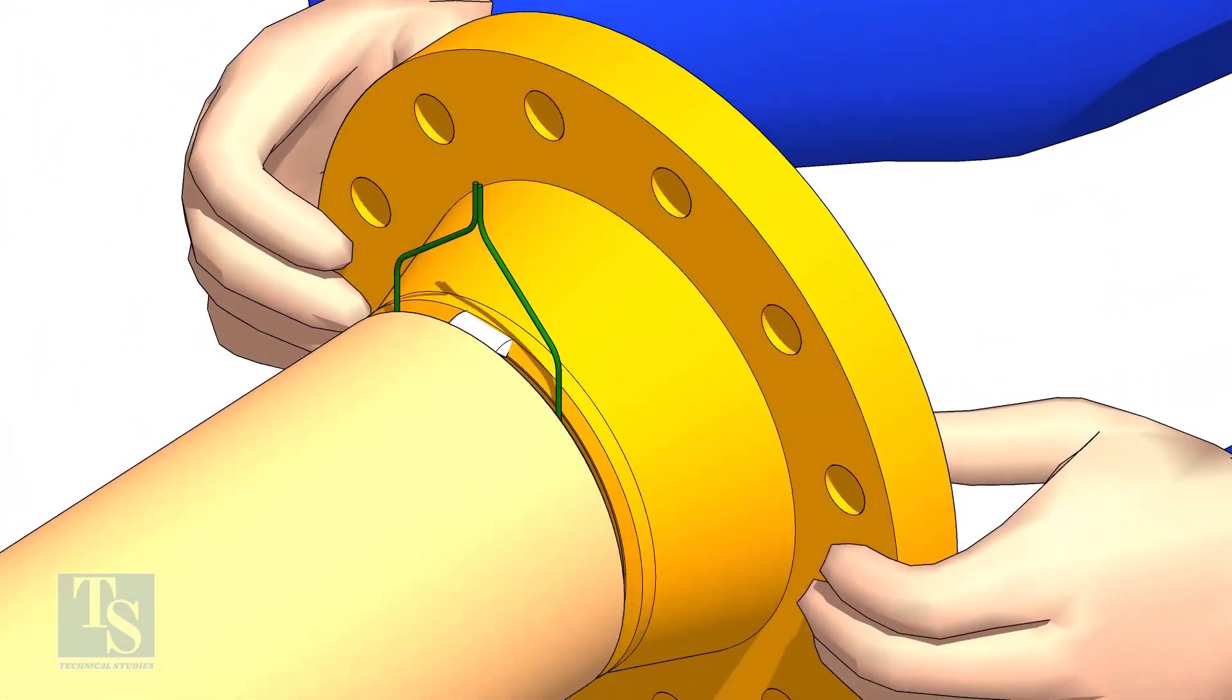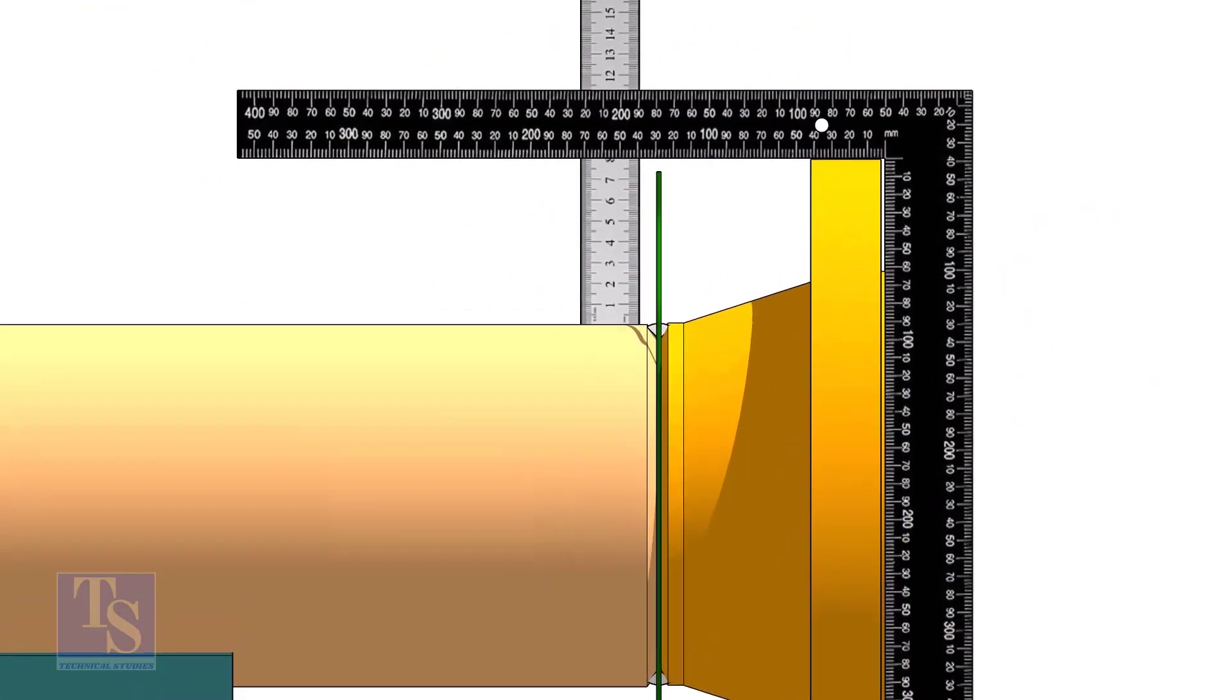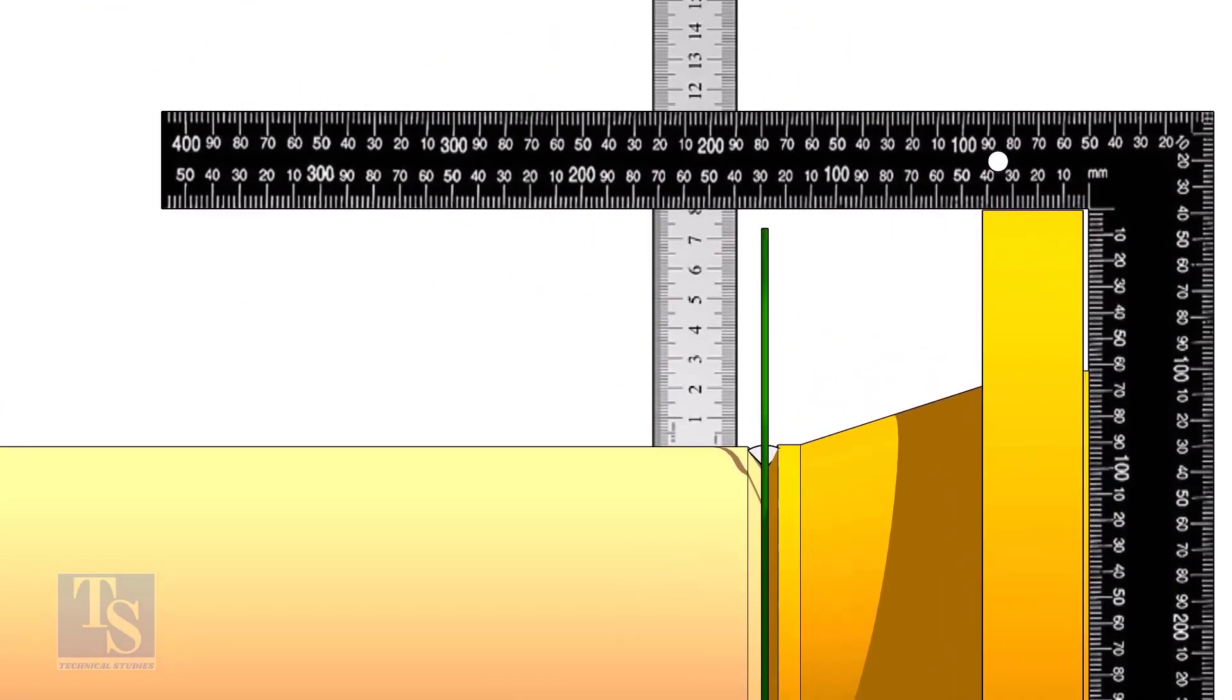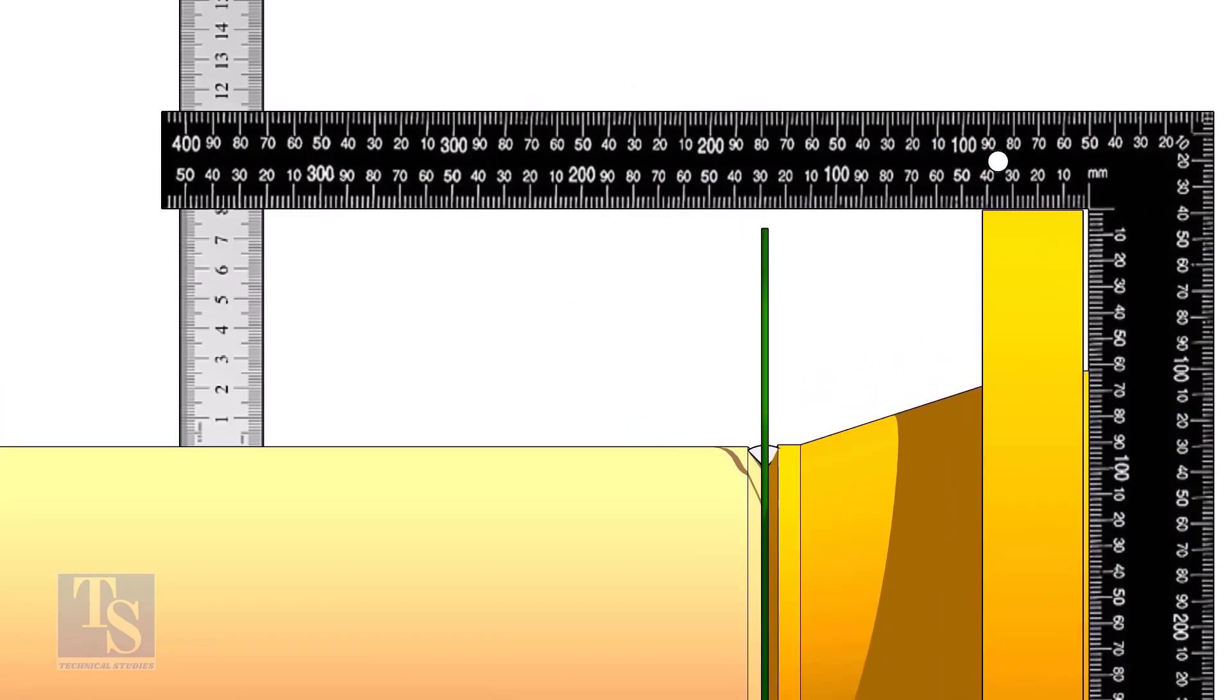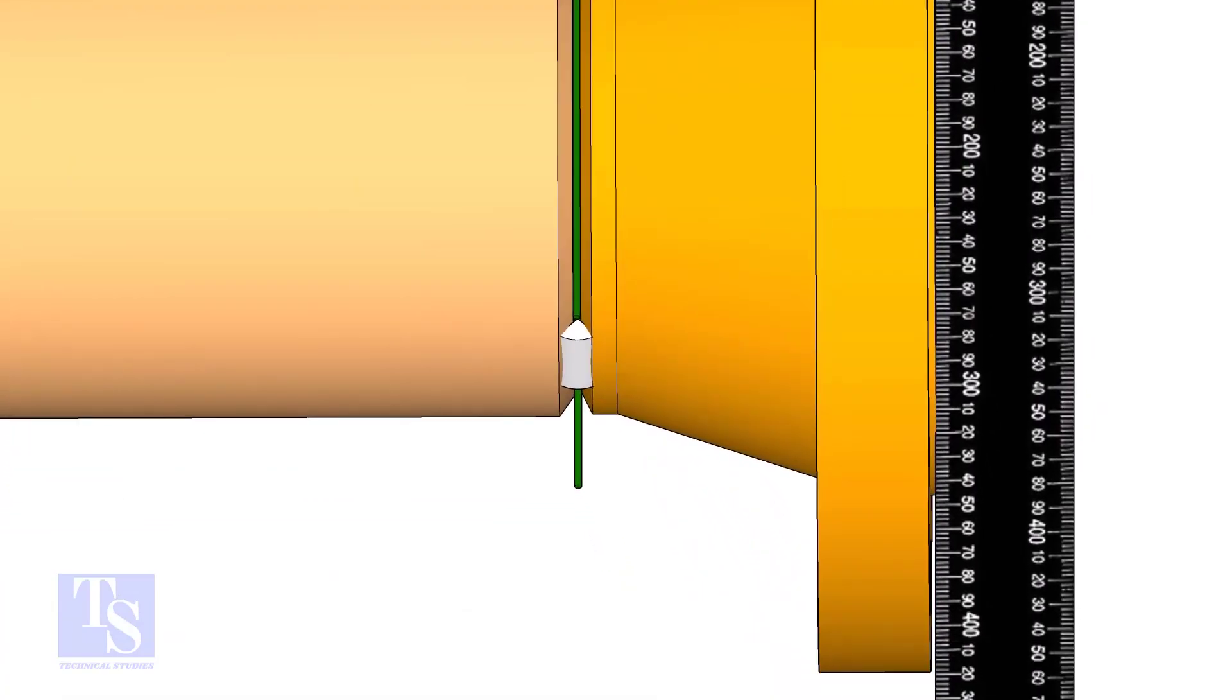Hold the flange with a gap rod in the joint. Tac weld on top side of the joint. Check the squareness of flange face to the pipe as shown. Tac weld at the bottom side of the joint.